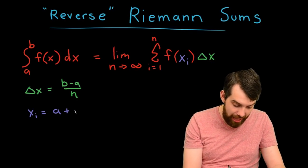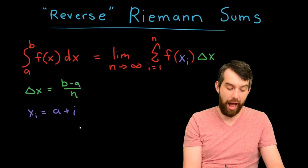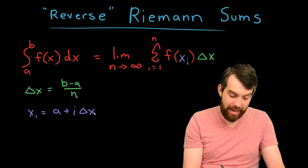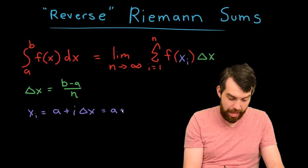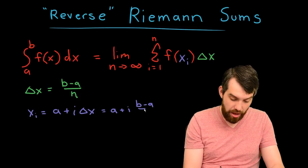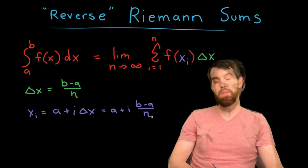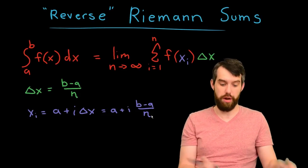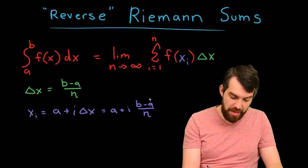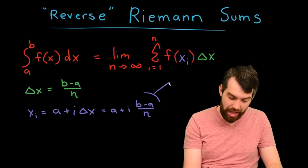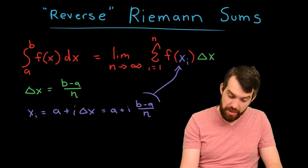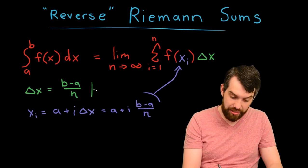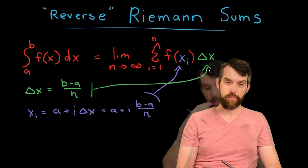So, in other words, it is a plus some number i times delta x, or, if I prefer, a plus i times b minus a, all divided out by n. This formula, which we have defined for the definition of Riemann integration, that you should be able to take this x_i and plug it in here, and that you should be able to take this delta x and plug it in there.